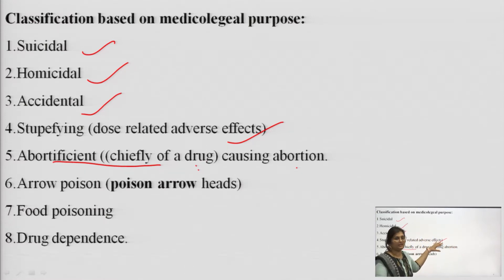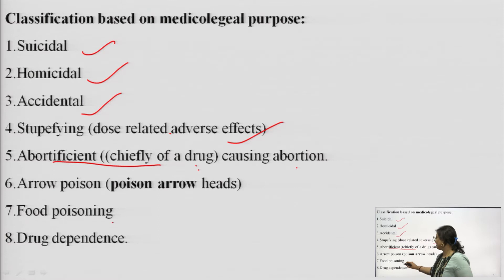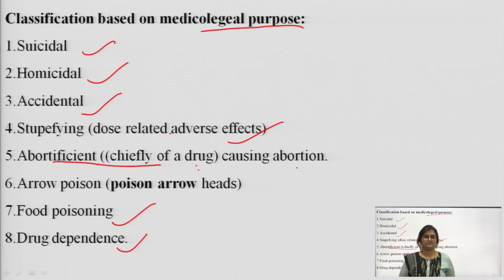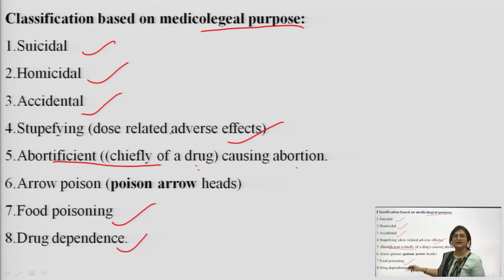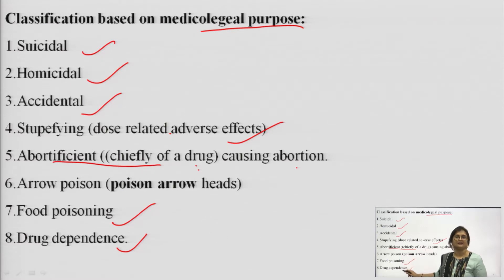Arrow poisons are used in minimal quantity on arrowheads and then they are speared. Next, food poisoning and drug dependence. These are the classification of poison based upon their medico-legal purpose: suicidal, homicidal, accidental, stupifying, abortifacients, arrow poisons, food poisoning, and drug dependence.